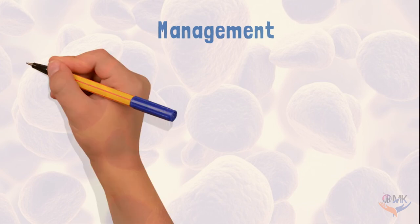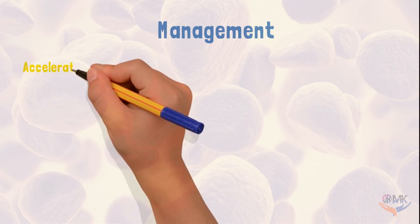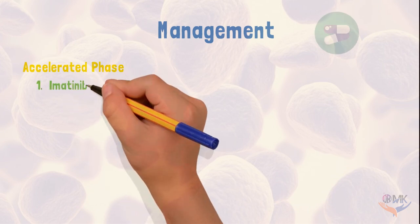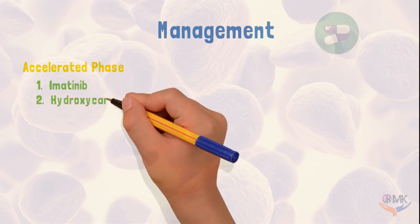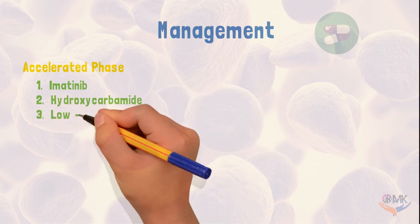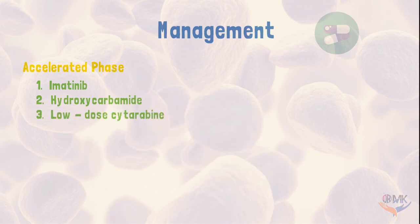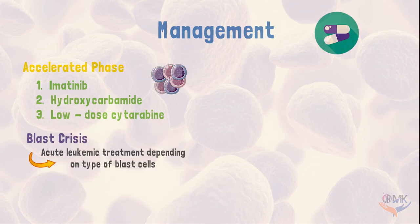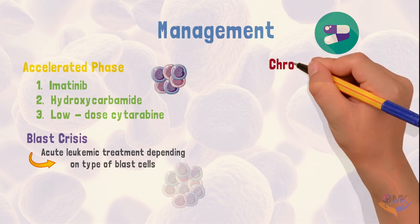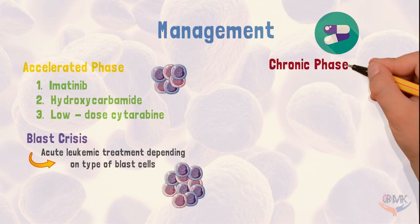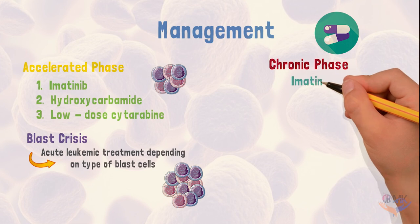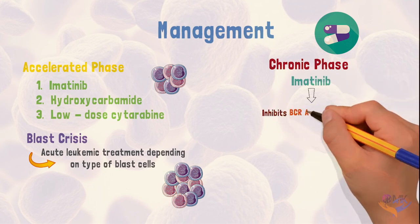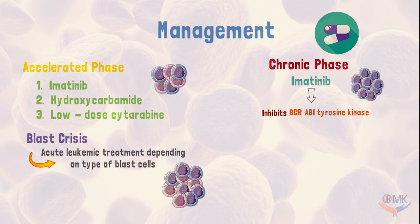The management of chronic myeloid leukemia depends on its phase. For the accelerated phase, imatinib, hydroxycarbamide, and low-dose cytarabine are given. Blast crisis is managed in the same way as acute leukemia, depending on the type of blast cells. For the chronic phase, imatinib is given, which inhibits the BCR-ABL protein, that is, tyrosine kinase.